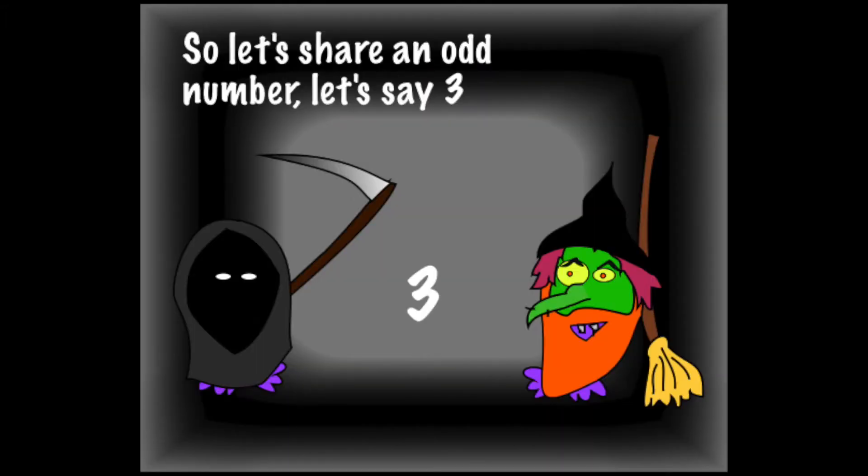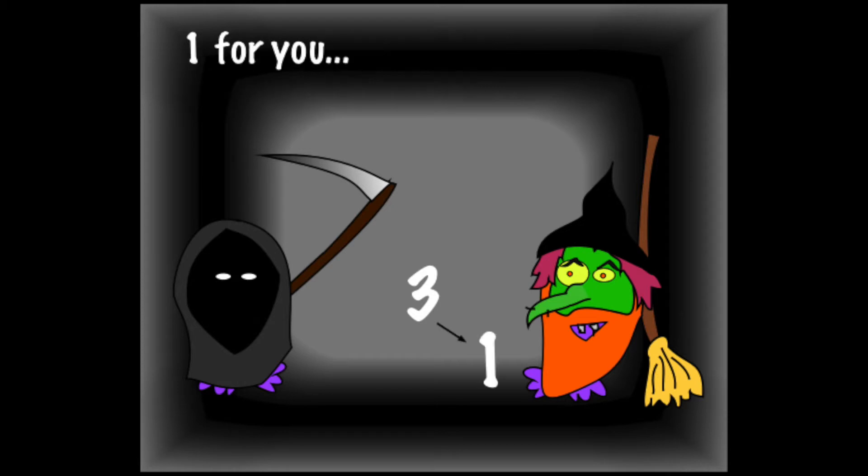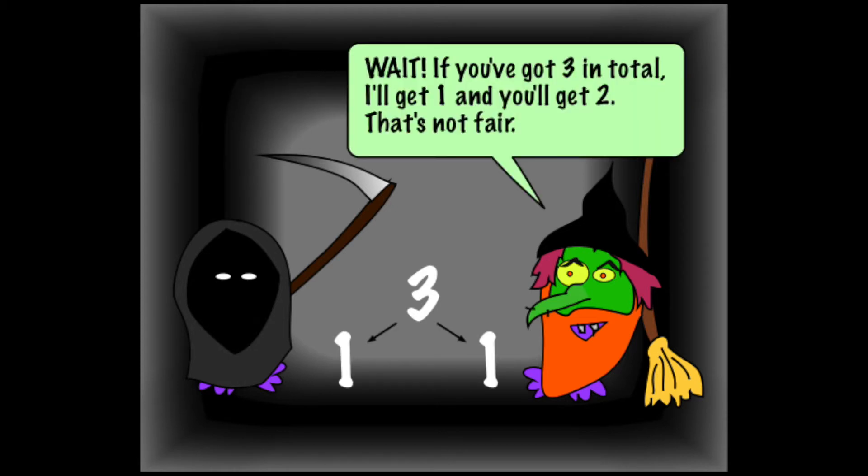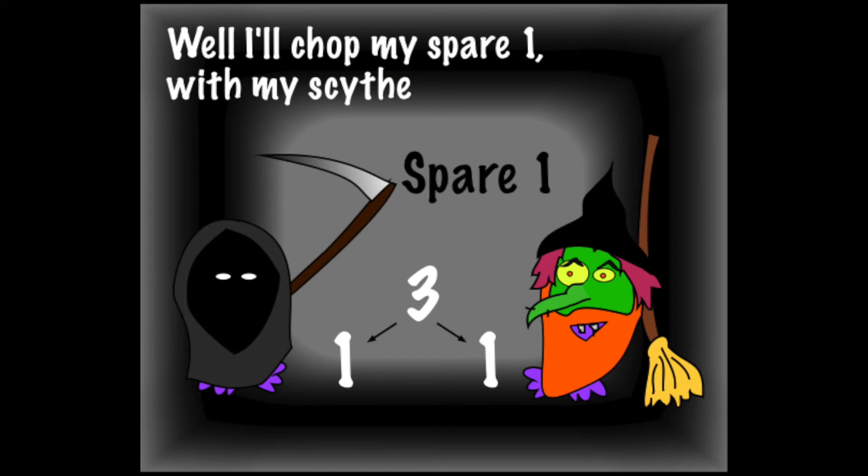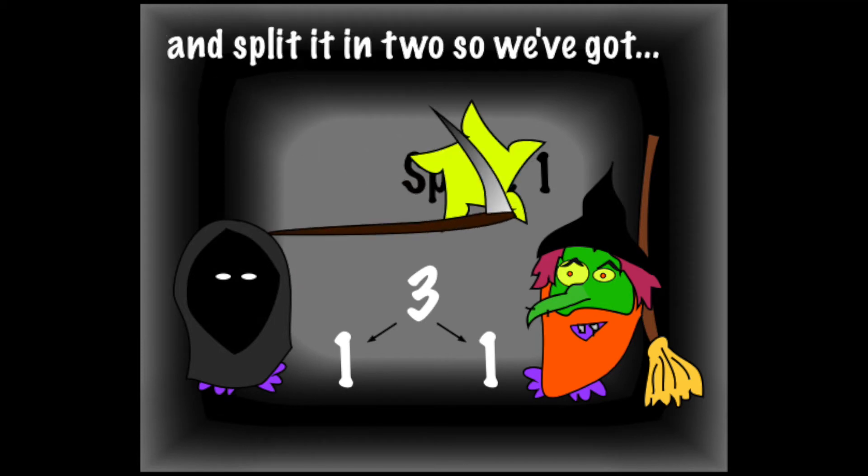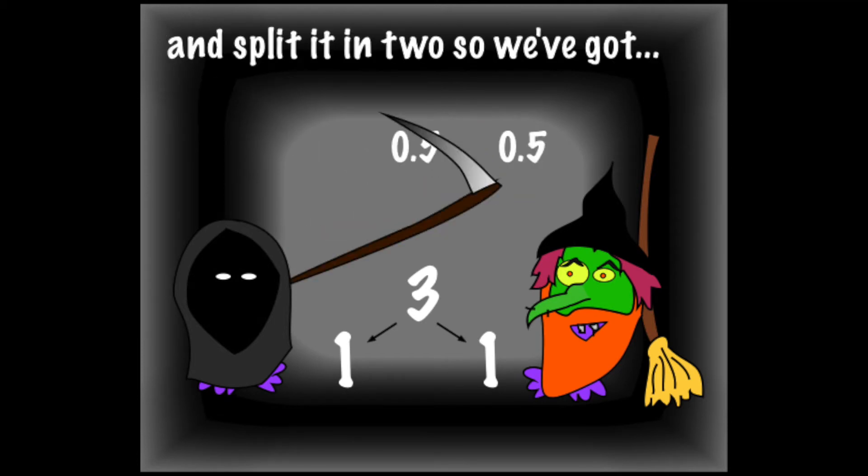So let's share an odd number, let's say three. One for you, one for me. Wait, if you've got three in total, I'll get one and you'll get two, that's unfair. Well, I'll chop my spare one with my scythe, then split it in two so we got...